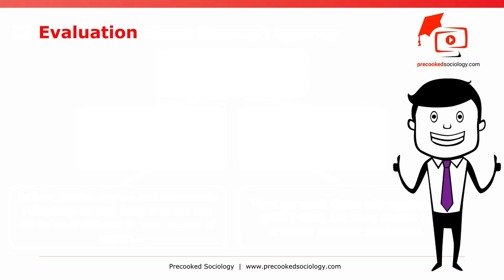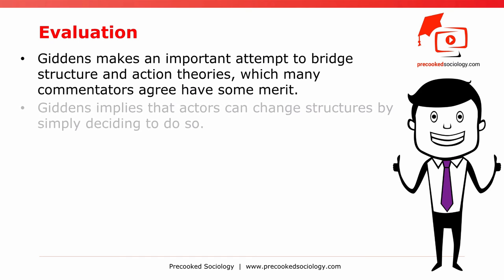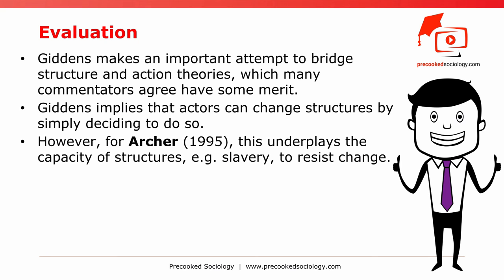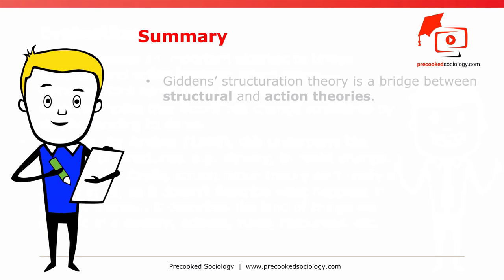Evaluation of Giddens. Giddens makes an important attempt to bridge structure and action theories, which many commentators agree has merit. However, Giddens implies that actors can change structures simply by deciding to do so — for Archer (1995), this underplays the capacity of structures like slavery to resist change. Likewise, for Crabe, structuration theory isn't really a theory at all, as it doesn't describe what happens in society — instead, it describes the kinds of things we will find in a society: actions, rules, resources, etc.